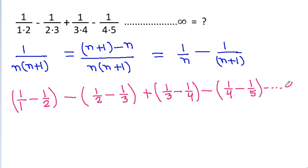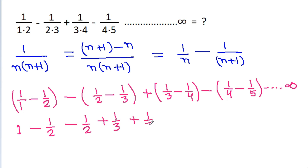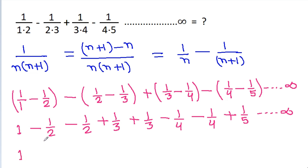Expanding: 1 - 1/2 - 1/2 + 1/3 + 1/3 - 1/4 - 1/4 + 1/5 up to infinity. We get 1, and -1/2 appears twice, 1/3 appears twice, -1/4 appears twice. Taking -2 common, we get 1 - 2(1/2 - 1/3 + 1/4 - 1/5 up to infinity).